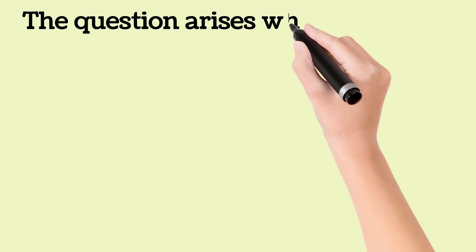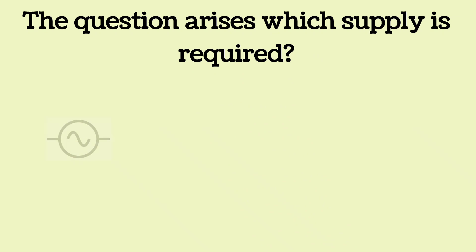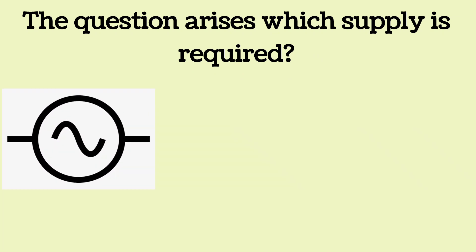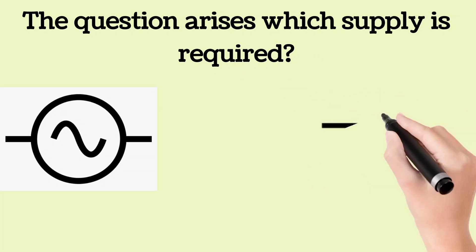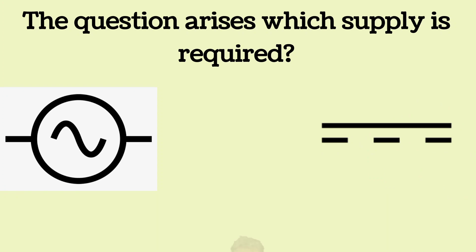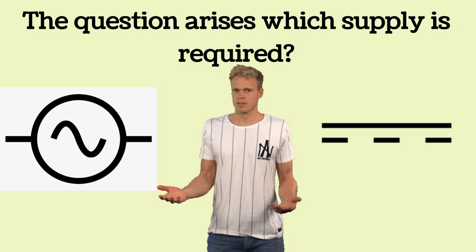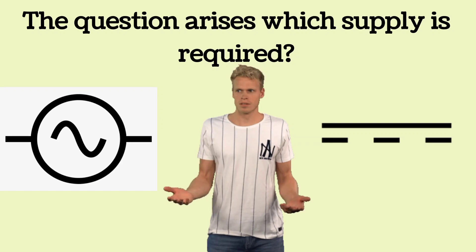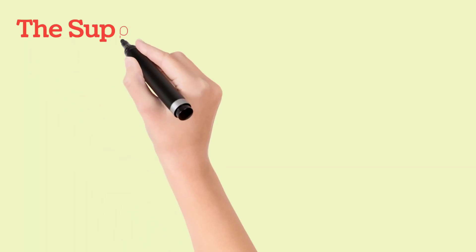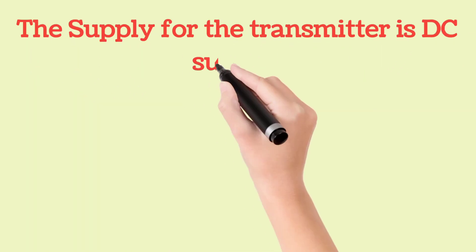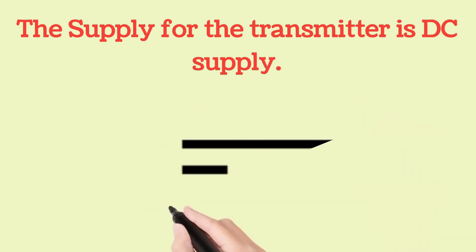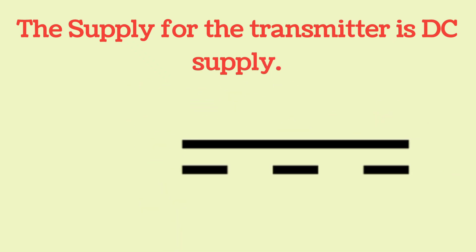Now the question arises: which supply is required for a transmitter? Many people have a doubt regarding its supply — whether it is AC supply or DC supply. Your doubts will be clear today. The supply for the transmitter is DC supply. Now we will see how much DC supply is required.